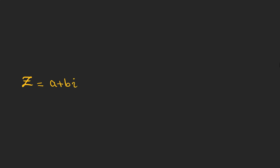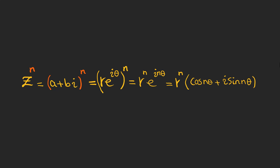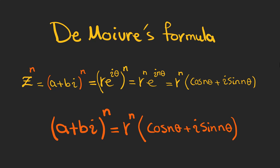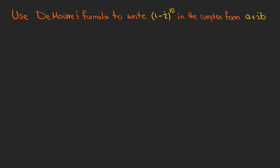Suppose we have a complex number a plus bi and we want to take it to the power of n. It would be easier to use the polar form and write this as r to the power of n times e to the power of i n theta, which equals r to the power of n times cosine n theta plus i sine n theta. This formula is called De Moivre's formula and we are going to use it to find the roots of a complex number. Now let's use De Moivre's formula to write 1 minus i to the power of 10 in complex form a plus ib.